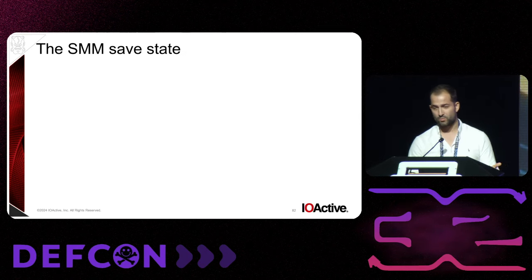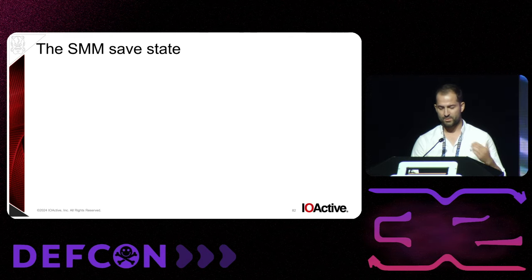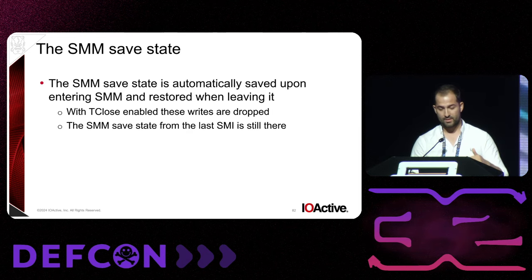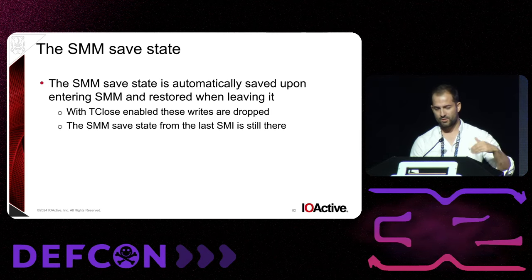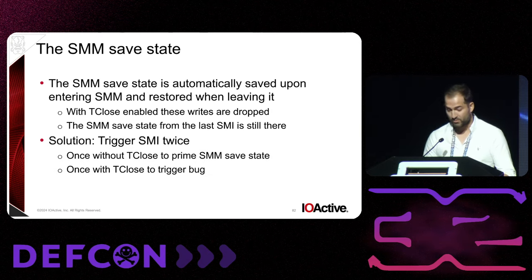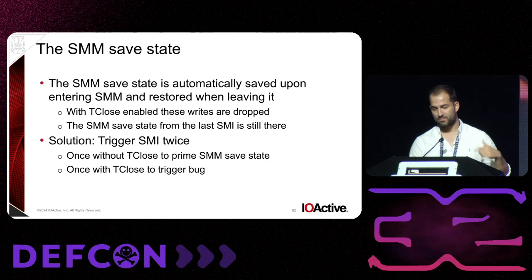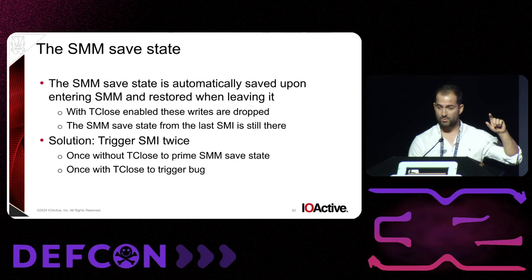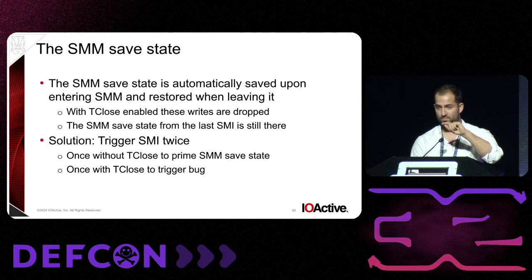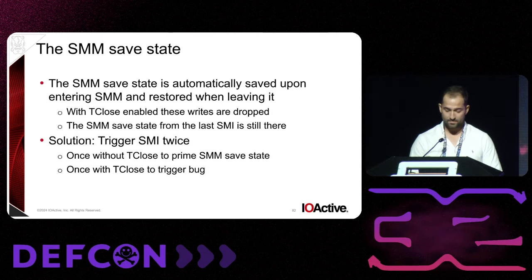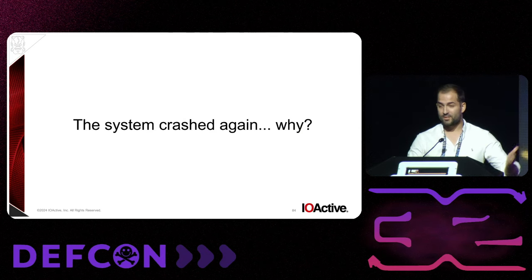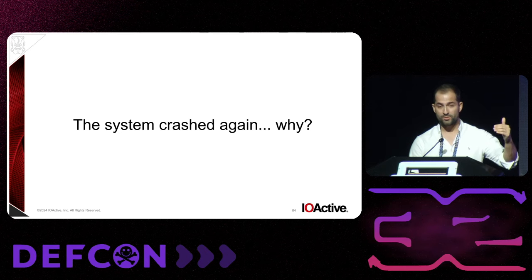The reason was the SMM save state. When a CPU goes to SMM mode, it saves the current register state into the SMM save state. When it returns, it just restores it. What happens is, when T-close is enabled, the writes when the core enters SMM are going to be discarded, which means when we return with T-close disabled, it's going to use stale values that were still there from before. To resolve this, the trick is pretty straightforward: we trigger the SMM twice. One time without T-close, and the second time with T-close. We first put core zero into a known controlled state, then trigger an SMM without T-close — this primes the SMM save state. Afterwards, when we trigger the bug with T-close enabled, the code goes through the same execution path and reuses the values we stored before. That worked. But unfortunately, it crashed again. This time we did see that core zero was returning from SMM — so that was great. We had full control of core zero. OS code was running. We saw our checkpoints.